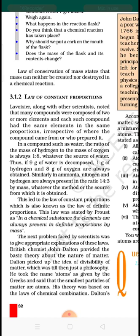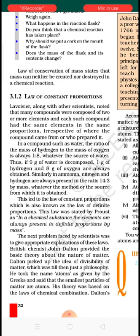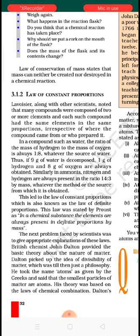In case of ammonia, the ratio of hydrogen and nitrogen is 14 to 3 by mass. This law was established by J. Proust. According to him, in a chemical substance, the elements are always present in a definite proportion by mass.